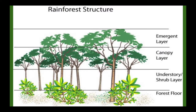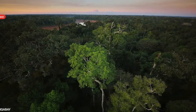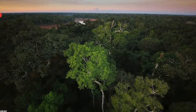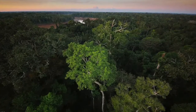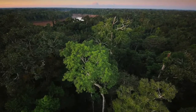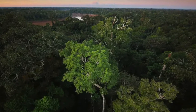Rainforests are structured in four layers: emergent, canopy, understory, and the forest floor. Each layer has unique characteristics based on differing levels of water, sunlight, processes, and species. Each level is an interdependent system, but each level influences the other.